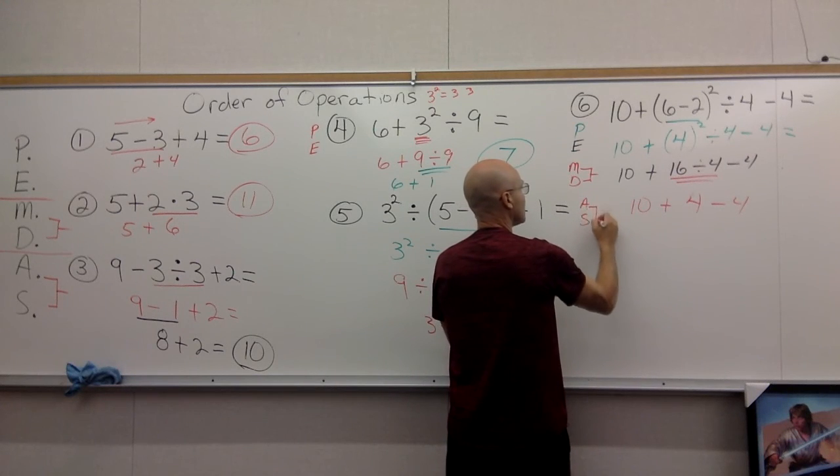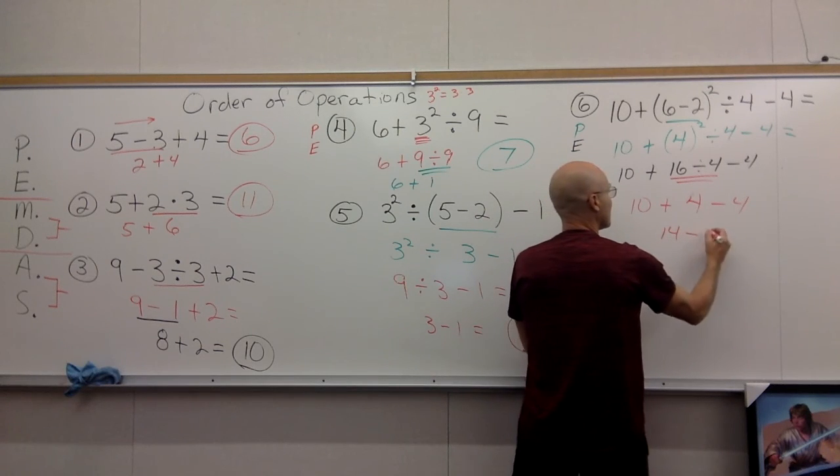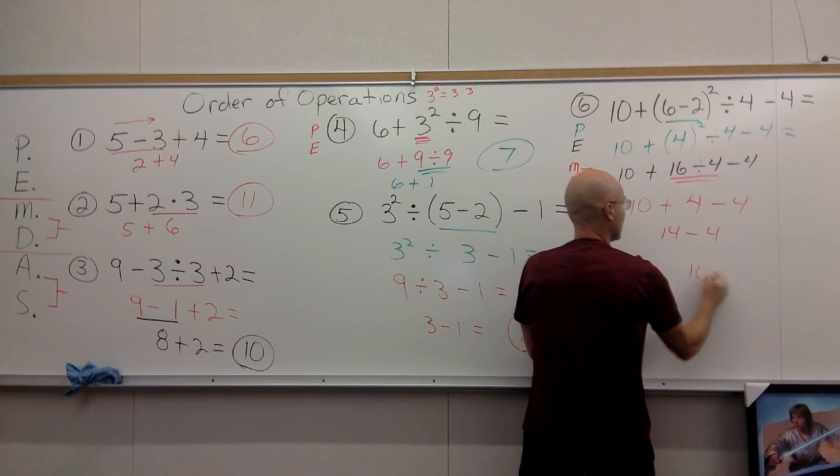Now you got 4 - 4 + 10. Now you can go to add and subtract, and the addition is on the left, and you get 14 - 4, and you get the final answer of 10.